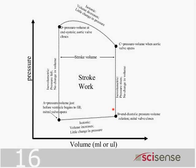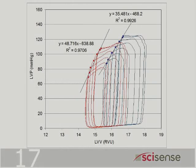Do you see how important the pressure-volume loop is in characterizing ventricular function? Here we have the stroke volume, there we have the end-diastolic pressure. If you generate a family of these pressure-volume curves, there is a method of extrapolating to a baseline which gives you contractility. This pressure-volume loop is enormously valuable in interrogating many properties of the cardiovascular system.